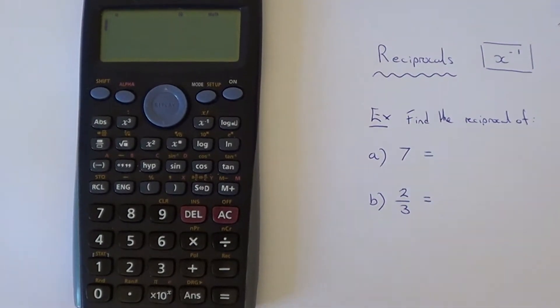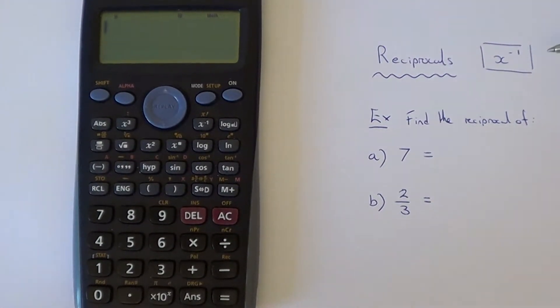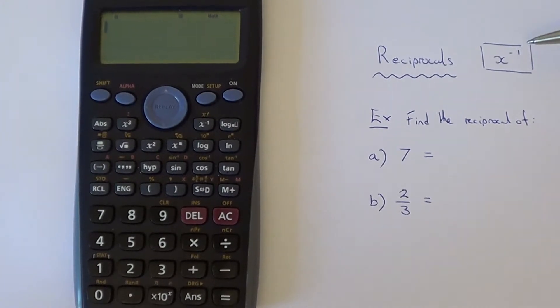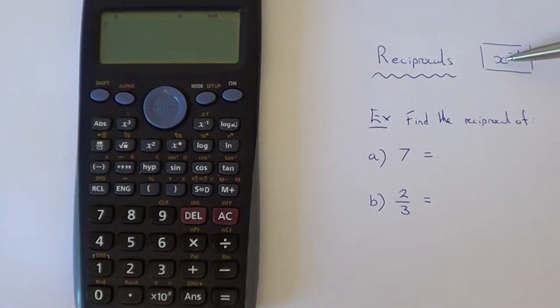Today I'm going to show you how to find the reciprocal on a Casio calculator. The button you'll be looking for to do this is the x to the power of minus 1 key.